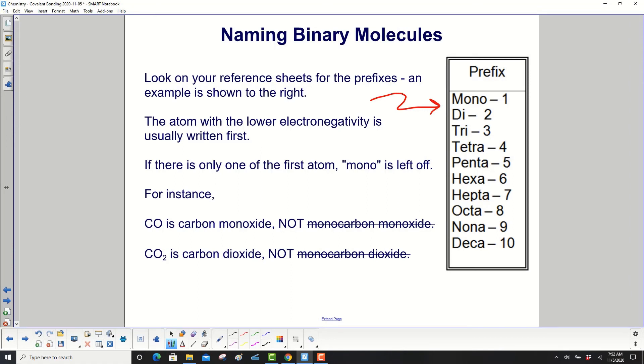The atom with the lower electronegativity is usually written first. If there is only one of the first atom, leave the mono off. For example, CO is carbon monoxide, not monocarbon monoxide. CO2 is carbon dioxide, not monocarbon dioxide.